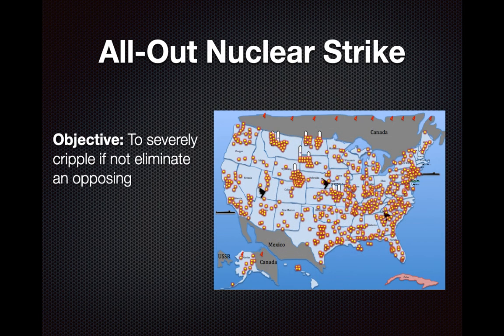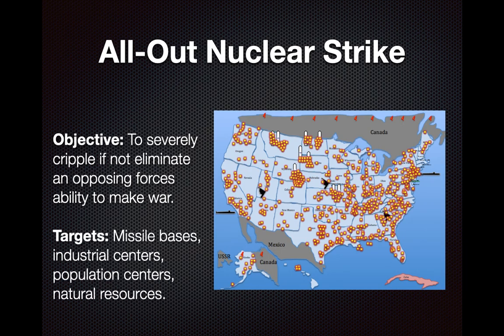All-out nuclear strike: the objective is to severely cripple, if not eliminate, an opposing force's ability to make war. Targets are missile bases, industrial centers, population centers, natural resources, and military bases. This map shows a realistic picture of nuclear detonations as strategically estimated by the CIA — the states that would be impacted by nuclear detonations in an all-out Soviet attack on the United States.